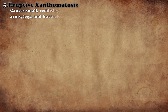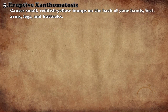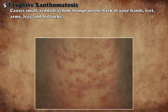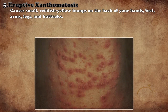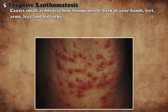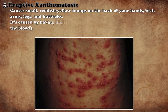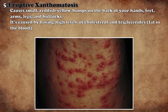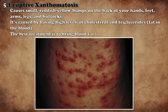Eruptive xanthomatosis are small red and yellow rashes that usually occur on the back of the hands, feet, arms, legs, and hips. The main reason for this disease is cholesterol, which is caused by excess fat in the body. For its treatment, it is necessary to reduce the fat in the body.